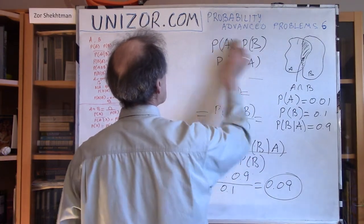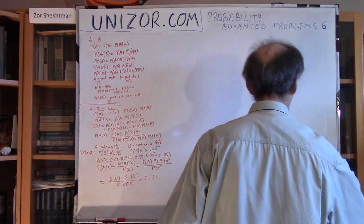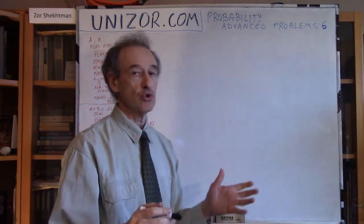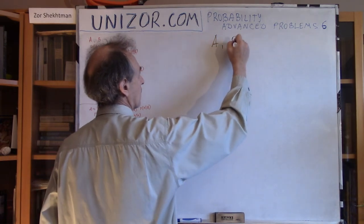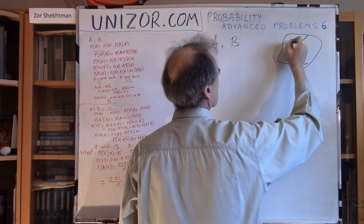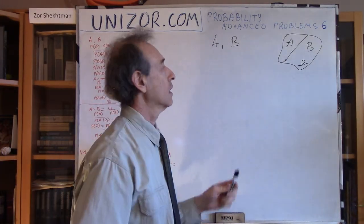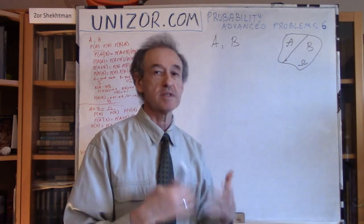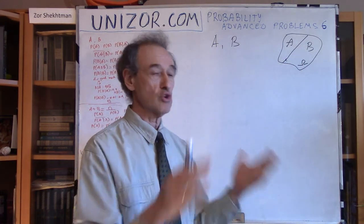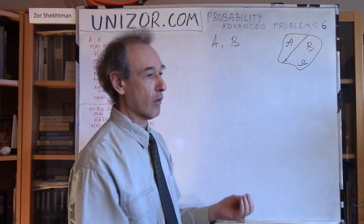My second problem is similar but more practical. You have two mutually exclusive events A and B, meaning the total sample space is divided by these two events. As an example: event A means the person is sick with a certain illness, and event B means he is not sick with that particular illness. These are mutually exclusive events that cover the entire population — either the person is sick with this illness or not, with no other cases.